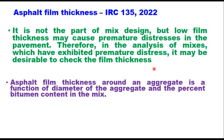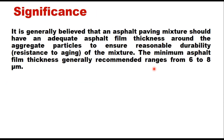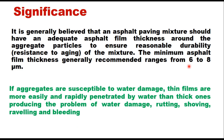Asphalt film thickness around an aggregate is a function of the diameter of the aggregate and the percent bitumen content in the mix. The film thickness decreases as the diameter of the particle decreases. It is generally believed that an asphalt mixture should have an adequate asphalt film thickness around the aggregate particles to ensure reasonable durability. The minimum film thickness generally recommended ranges from 6 to 8 microns.